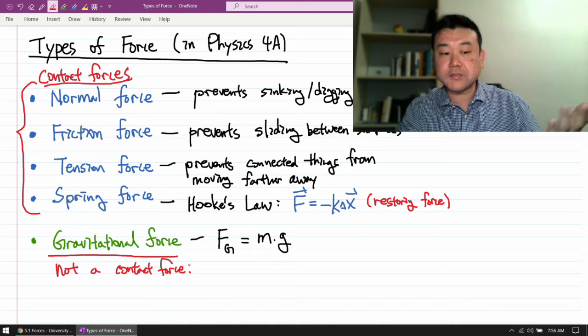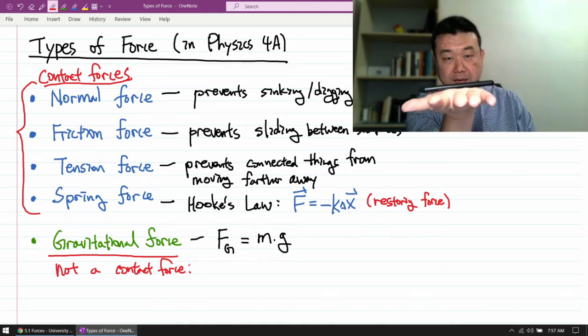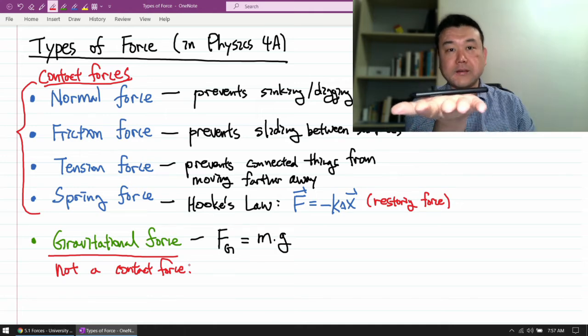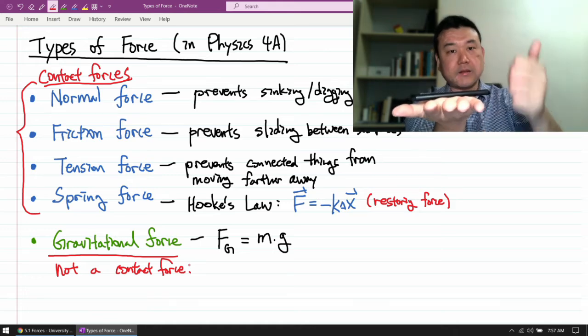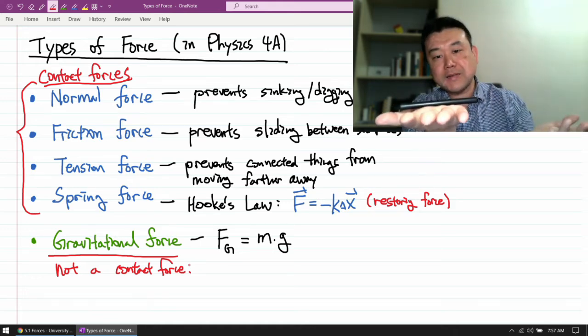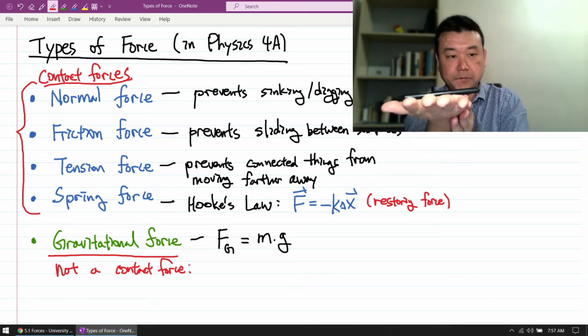Now, this isn't to say for gravity to act, nothing can be touching it, so while this is resting on my hand, gravity is still on it. In this situation, gravity is pulling it down, but the normal force from my hand is also pushing it up, so they balance out, and it's not accelerating. The net force is equal to zero.